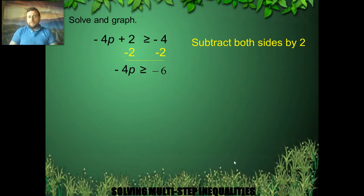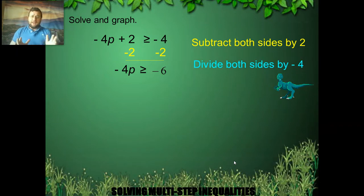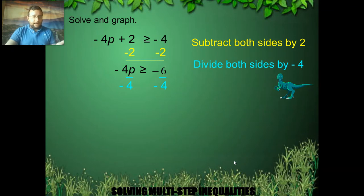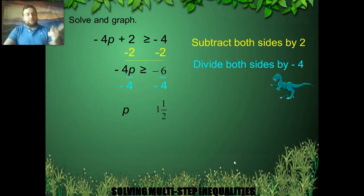Now I have to get rid of the negative 4 — not 4, negative 4. I have to divide both sides by negative 4. The negative 4 will cancel out on the left, and I get just p. On the right side, negative divided by negative means positive, and 6 divided by 4 is 1 and a half. But the key is what happens to the inequality sign: because I'm dividing by a negative, I must flip the sign.